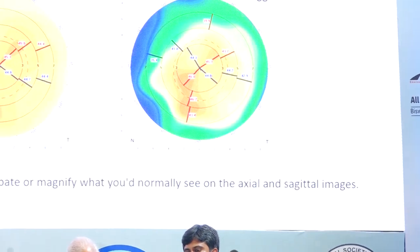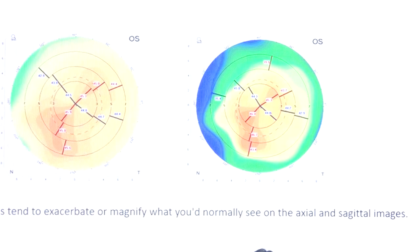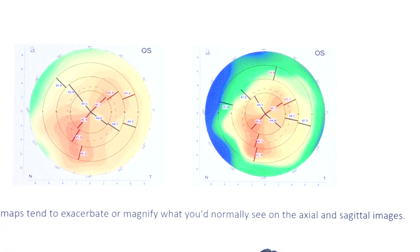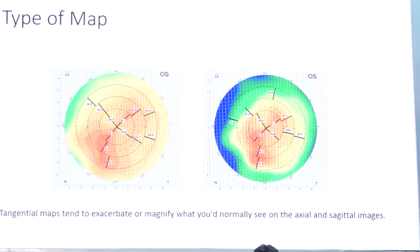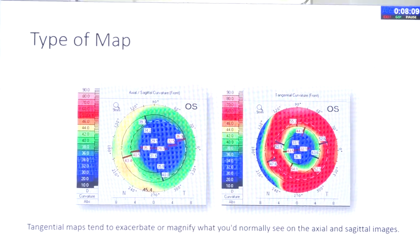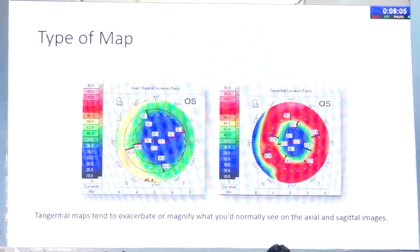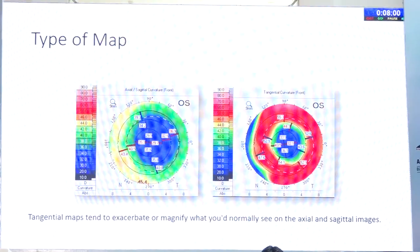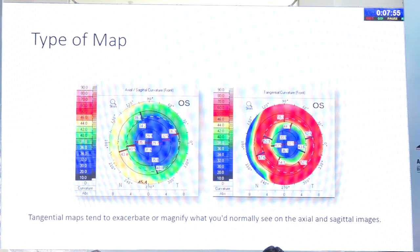I will be talking on the topographic aspect of refractive cataract surgery. We have two main map types: an axial or sagittal map and a tangential map. The basic difference is that the tangential map tends to exacerbate and magnify what you normally see on an axial map — this is very helpful when talking about post-refractive surgery. The tangential map gives the size and position of the optical zone relative to the pupil, giving you more data to answer questions about post-operative doubts.